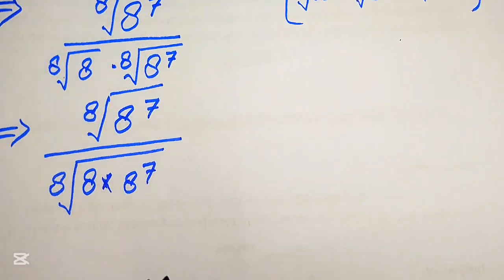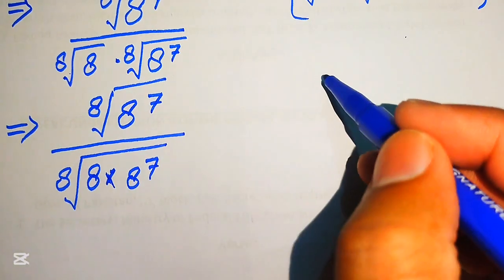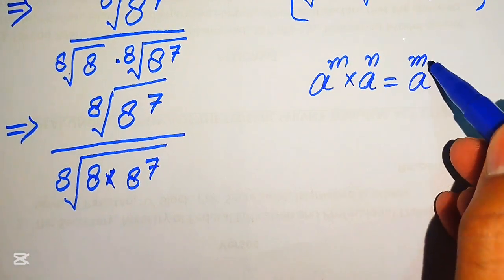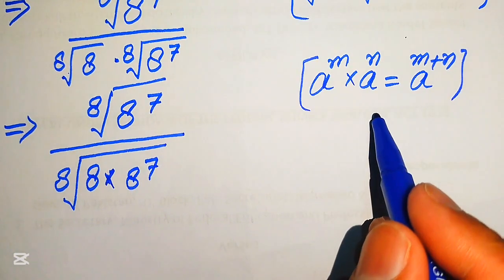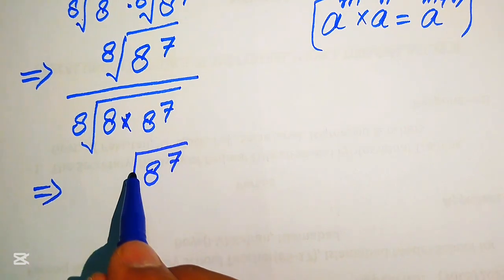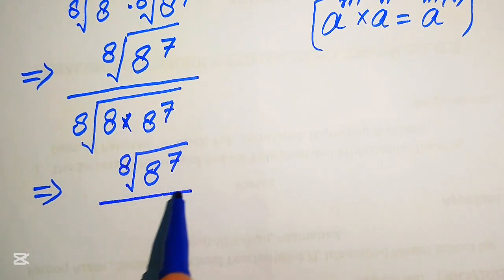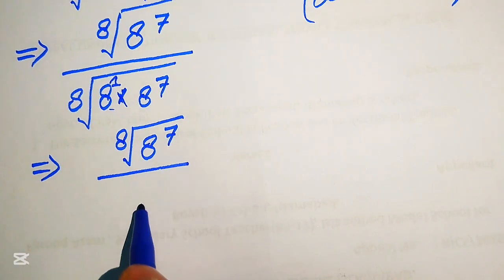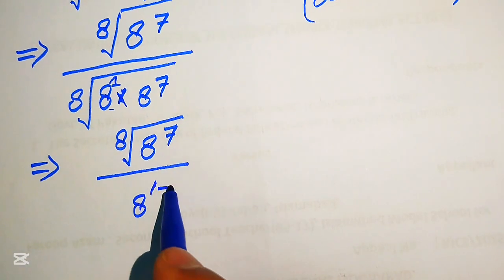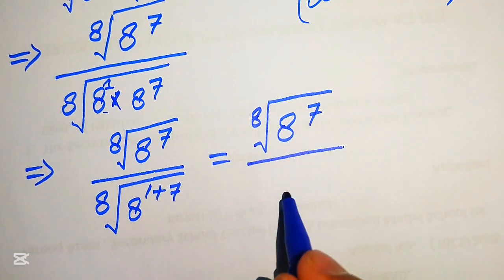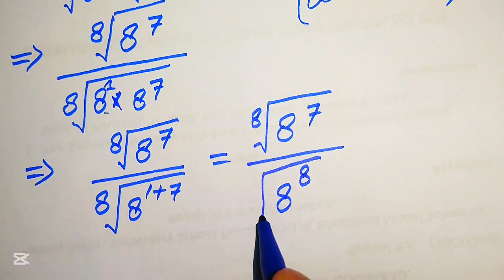Inside the 8th root in the denominator, we apply the exponent law: a to the power of m multiplied by a to the power of n equals a to the power of m plus n. Here, the exponent of the first 8 is 1 and the other is 7, so we write this as the 8th root of 8 to the power of 1 plus 7, giving us the 8th root of 8 to the power of 8 in the denominator.